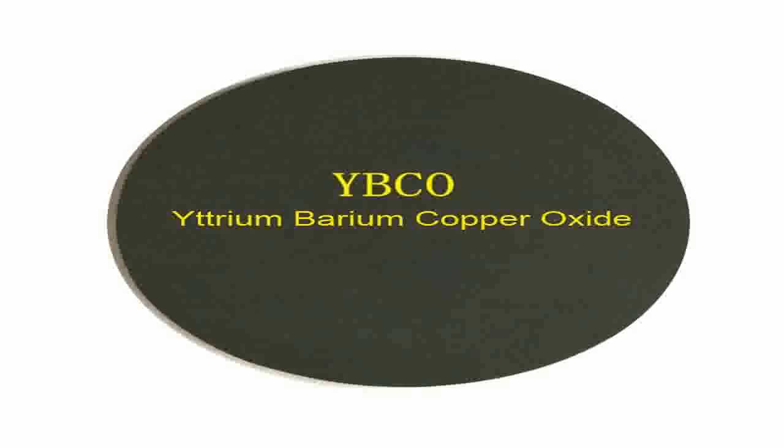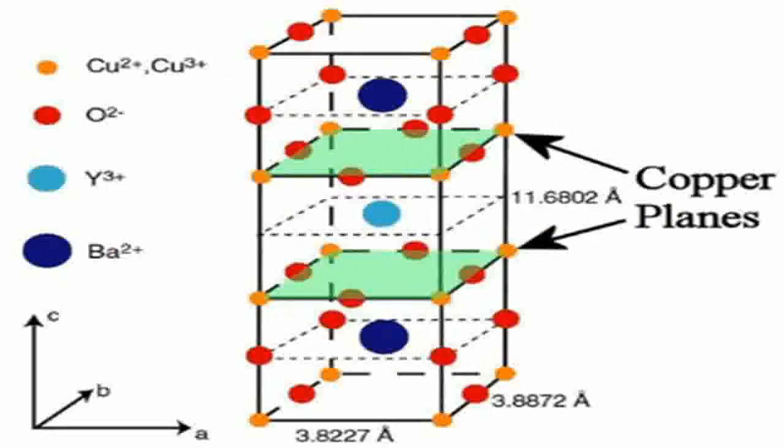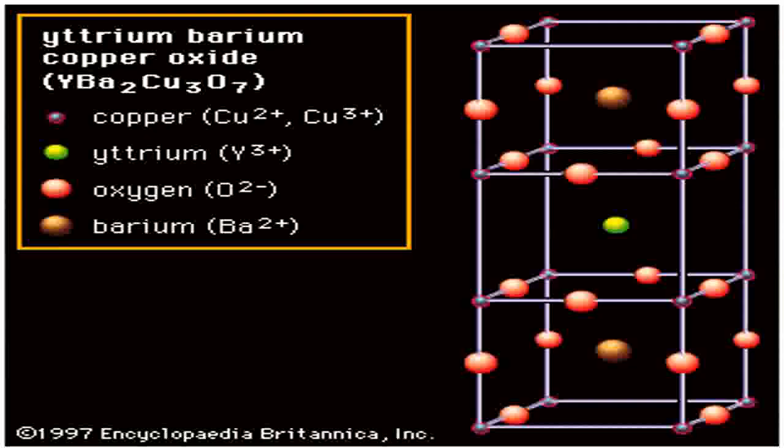Second, magnetic levitation (MAGLEV) trains. The strong magnetic fields generated by YBCO are used in the levitation and propulsion of MAGLEV trains, enabling higher speeds and quieter operation than traditional rail transport.